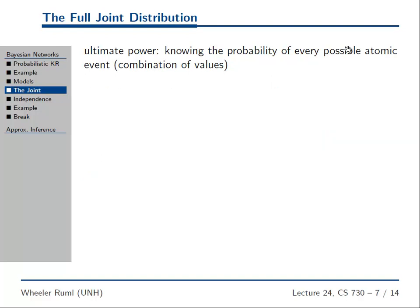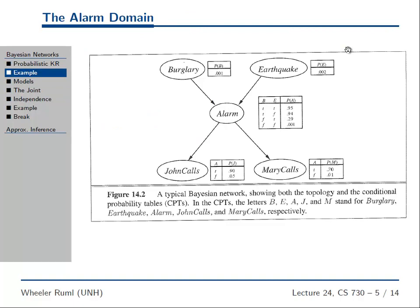So what is a Bayes net besides a picture? What's the semantics? What does it represent? If we're using this as a knowledge representation, we need to know what it means. We need to have a semantics, models or possible worlds or things like that. So what are the possible worlds here?